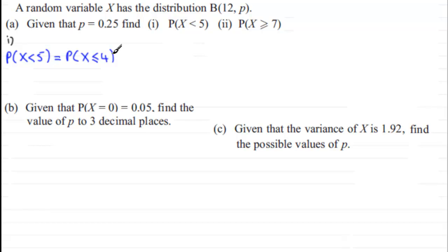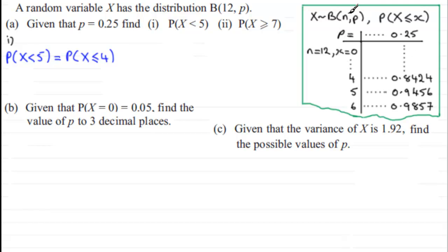We can now use the cumulative binomial distribution tables, which give us the probability of X being less than or equal to a given value. Taking P equal to 0.25, number of trials n=12, and observed value X=4, we look under the 0.25 column and find 0.8424. So that's our answer — nice and quick: 0.8424.